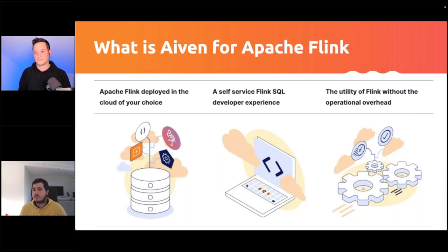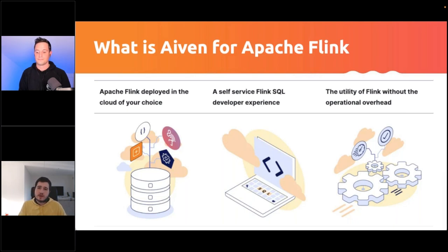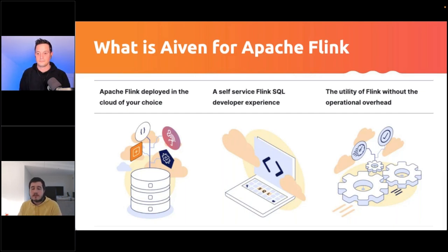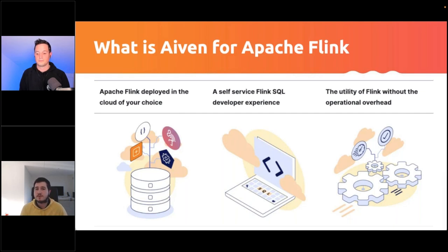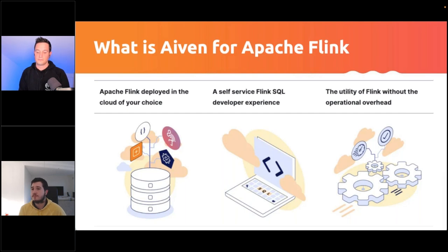This is not all. We also give back to the Flink community — we have many committers working with us as part of our open-source office. Our business interests are fully aligned with the Apache Flink project: we try to give back as much knowledge and work as possible to the upstream project. This results in a faster-evolving upstream project with more features, and guarantees that we will continue to be open-source first.